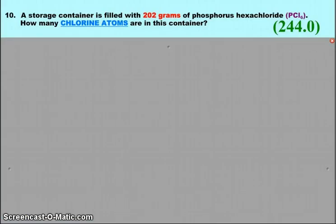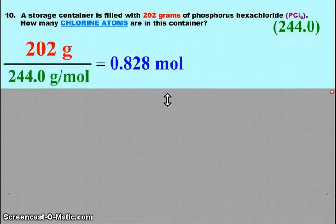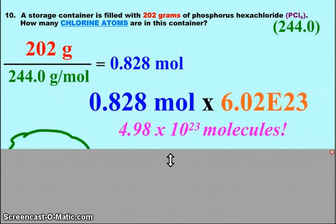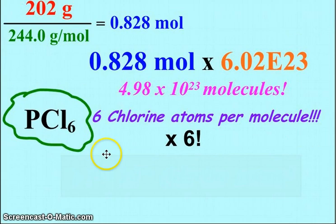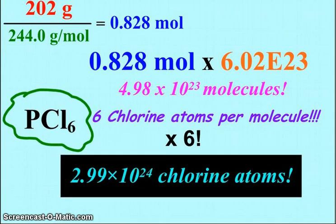In our last problem here, we've got the storage container with 202 grams of phosphorus hexachloride, PCl6, 1 phosphorus, plus 6 chlorines, 35.5 each of them. That's how we get the 244.0 molar mass from the periodic table. So how many chlorine atoms are in this container? Well, starting in mass city, starting with the mass, I've got to divide by the molar mass, and that tells me how many moles of the phosphorus hexachloride there are. Well, when I take that times Avogadro, it tells me that I've got 4.98 times 10 to the 23rd molecules. But remember now, this is the one where we've got to look at the chlorine inside the molecule. My formula, PCl6, tells me there's 6 chlorine atoms in every one of these molecules. So when I take that number times 6, that's how I figure out there's 2.99 times 10 to the 24th chlorine atoms.